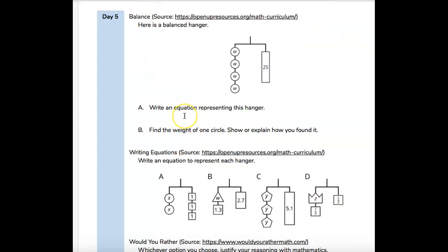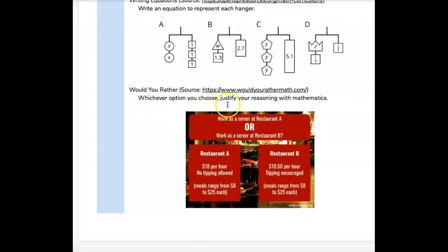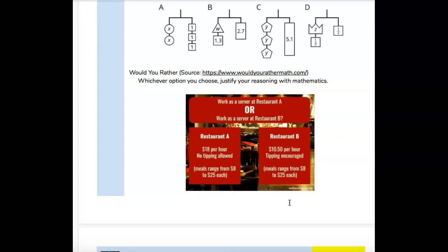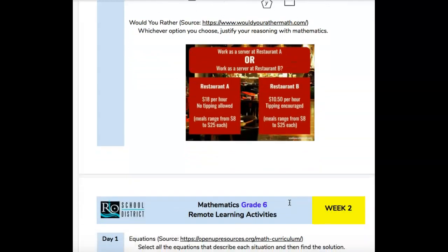Let's see here. I'm going to have to move the paper up now. Would you rather... Whichever option you choose, justify your reasoning with mathematics. Would you rather work as a server at restaurant A or work as a server at restaurant B? So this is, if you work at restaurant A, you get $18 an hour. But no one's allowed to tip you. Meals range from $8 to $25. If you work at restaurant B, you get less per hour, $10.50 an hour. But you'll get tips. And meals range in the same amount, $8 to $25. So you're going to have to decide that and explain why you would pick the restaurant you want.